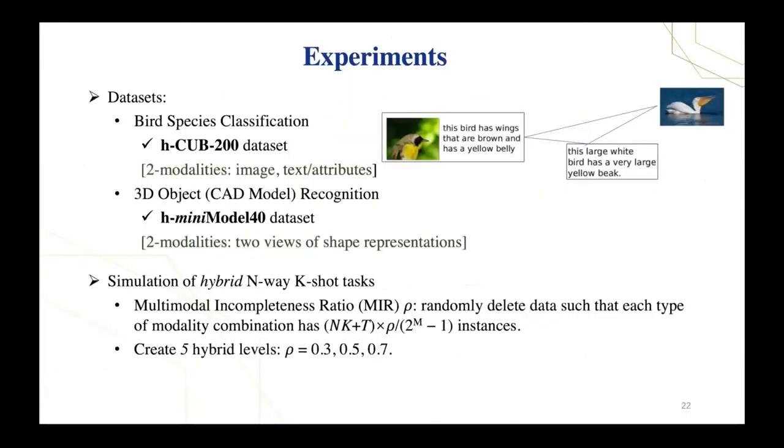As for our experiment, since we define a new problem setting for heterogeneous web content, we have simulated two hybrid few-shot classification datasets using two existing multimodal datasets. The first dataset is for bird species classification and has two modalities, image and text. In the simulated hybrid task, each sample is either an image or text or the combination of image and text.